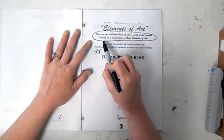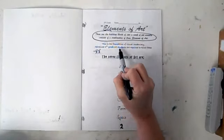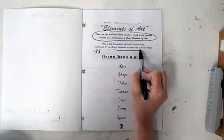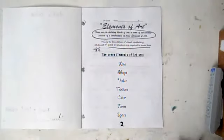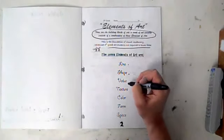Elements of art: these are the building blocks of art. A work of art usually consists of a combination of these elements of art. This is the foundation of visual vocabulary. Advanced 8th grade students are required to know these. The seven elements of art are line, shape, value, texture, color, form, and space.